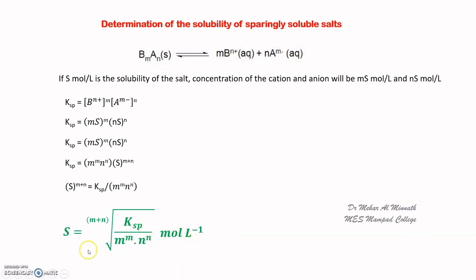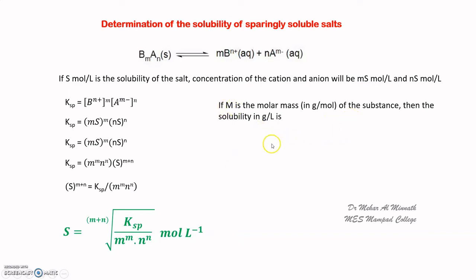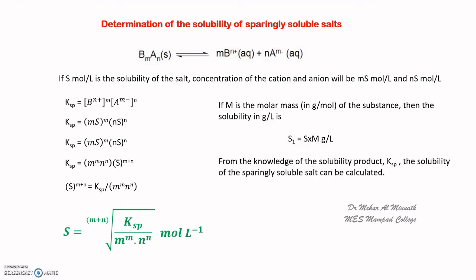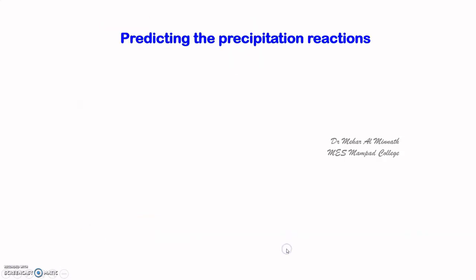The unit of solubility is moles per liter. If M is the molar mass of the substance, then solubility in grams per liter is S₁ = S × M. So from the knowledge of the solubility product Ksp, the solubility of a sparingly soluble salt can be calculated.